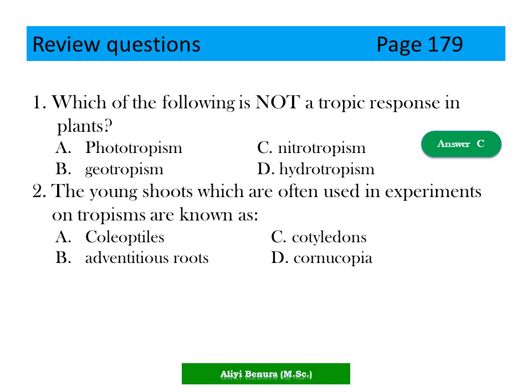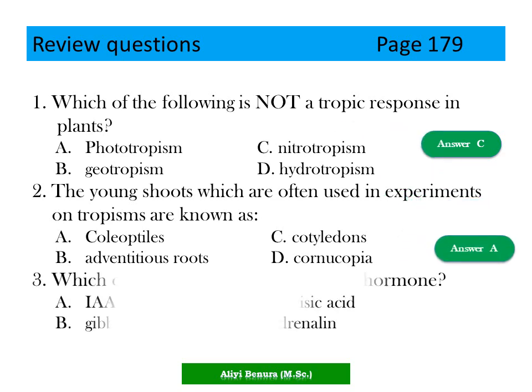The young shoots which are often used to experiment on tropism are known as: A. Coleoptiles, B. Adventitious roots, C. Cotyledons, D. Corneocopium. The answer should be A, Coleoptiles.